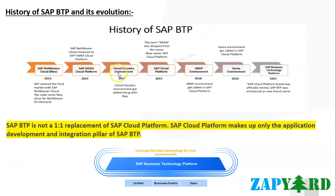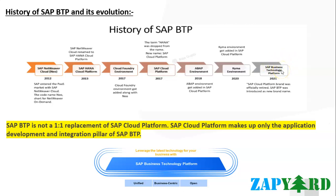Also in 2017, the Cloud Foundry environment was added as a new environment. Then in 2018, the ABAP environment was added to what was then called SAP Cloud Platform. And in 2020, one more environment was added called the Kyma Runtime environment.